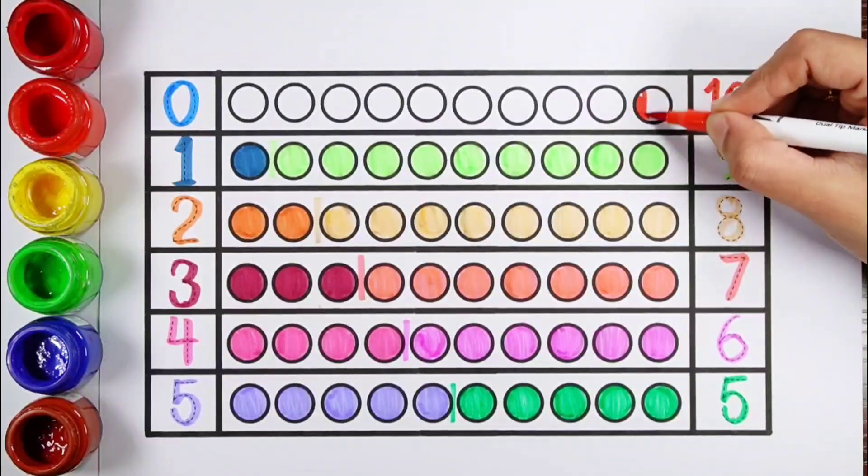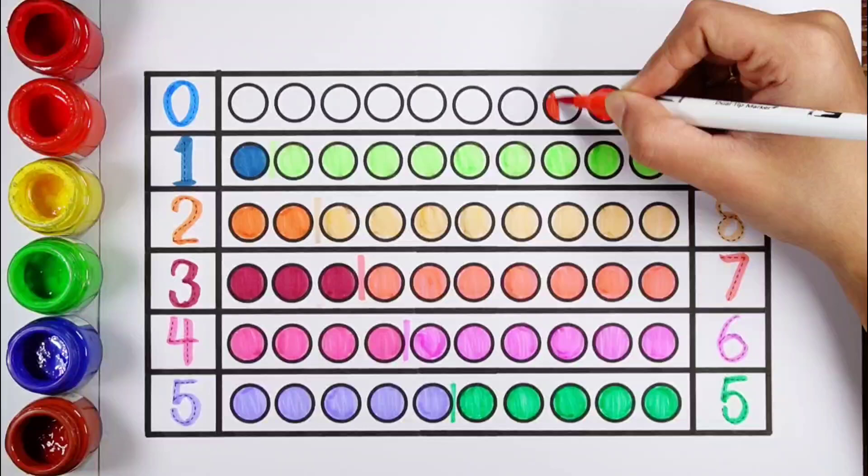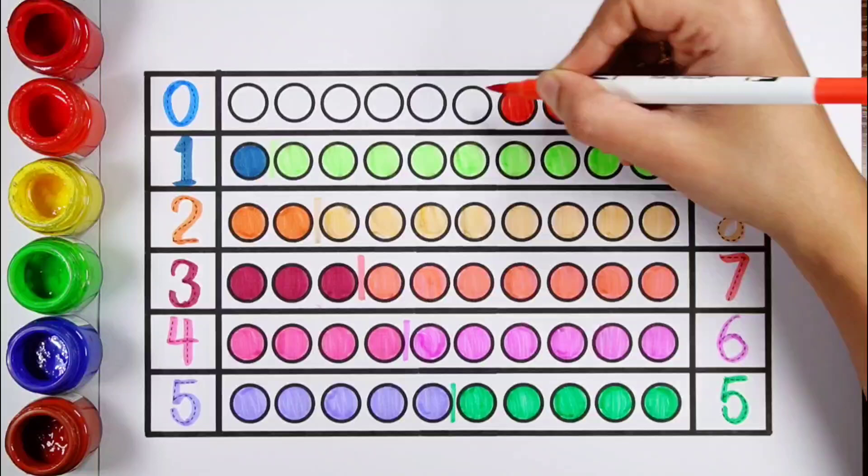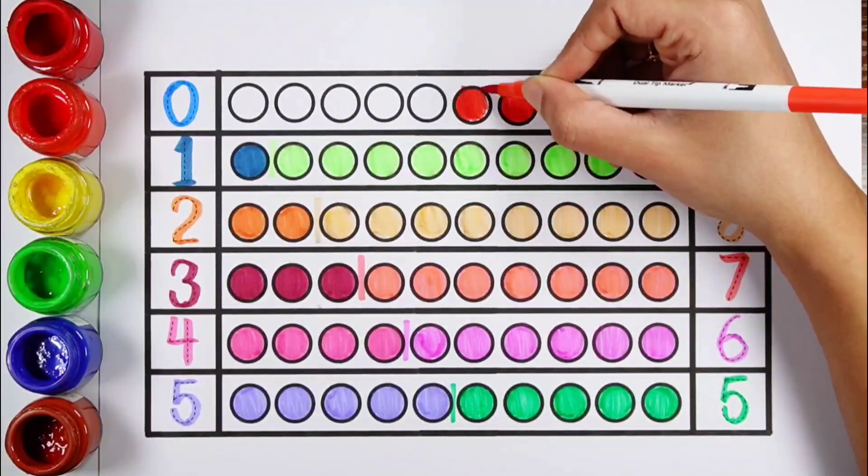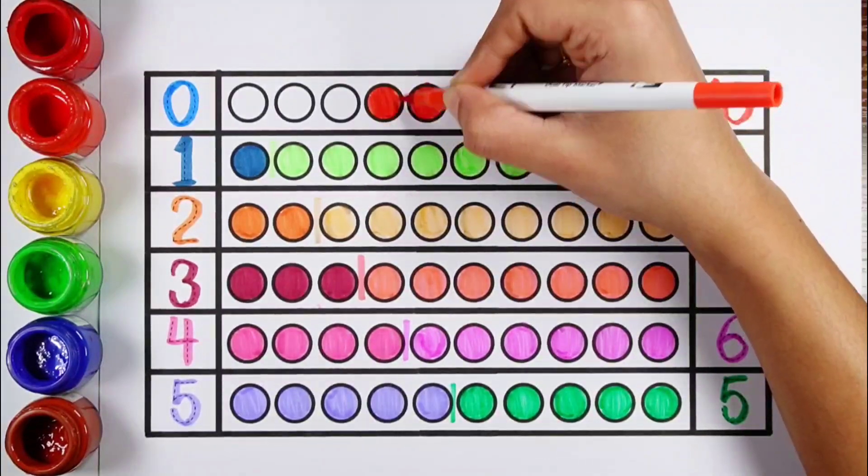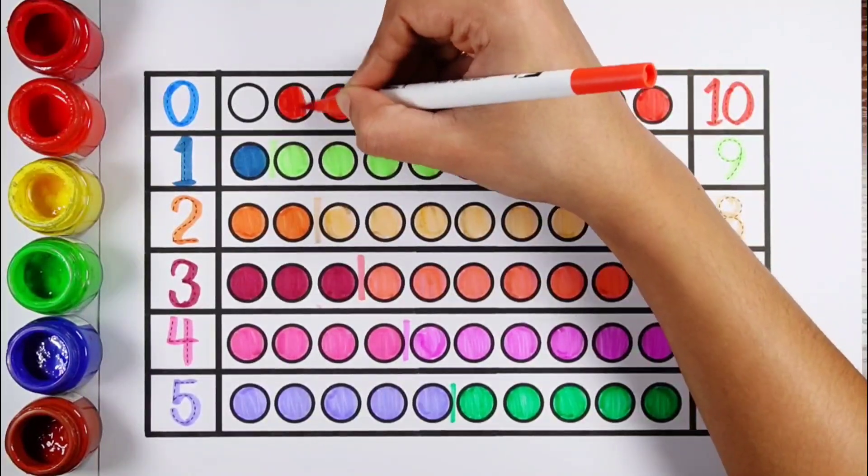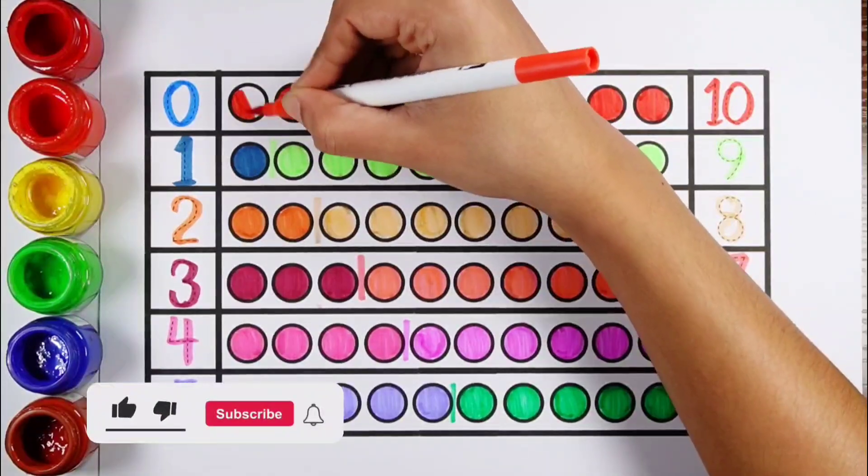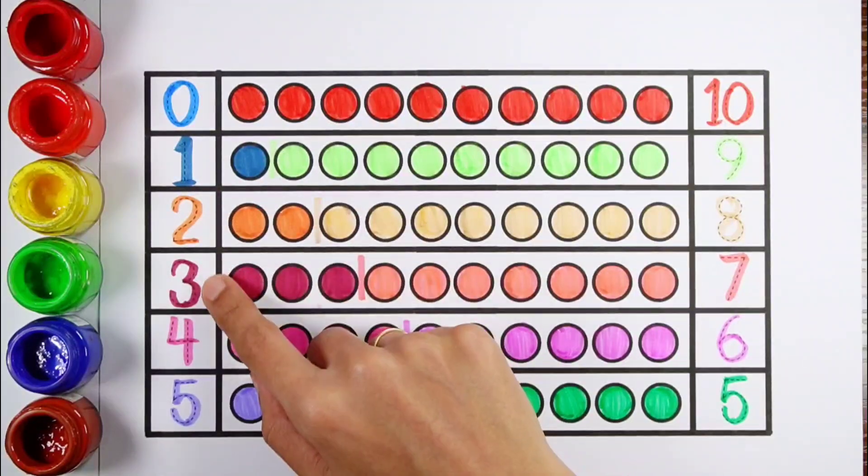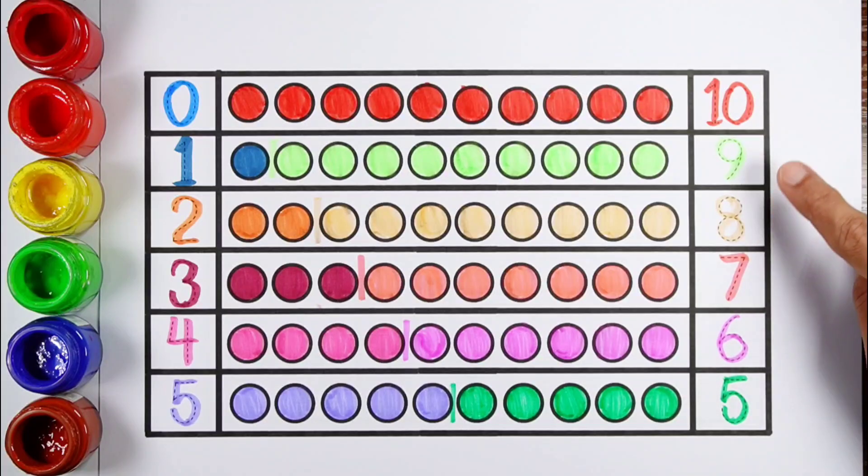Number 10. 1, 2, 3, 4, 5, 6, 7, 8, 9, 10. 10 balls. 0, 1, 2, 3, 4, 5, 6, 7, 8, 9, 10.